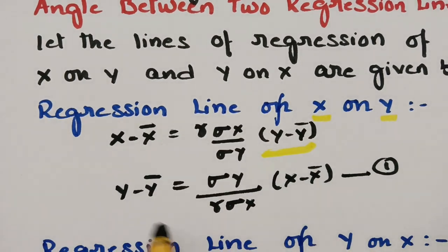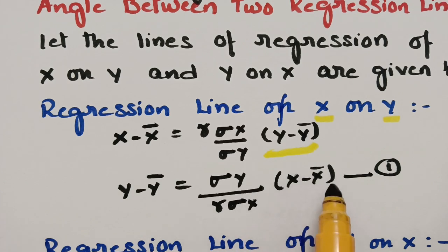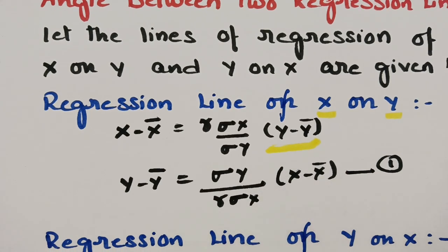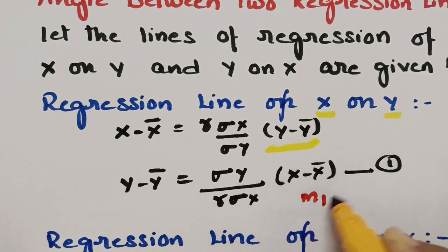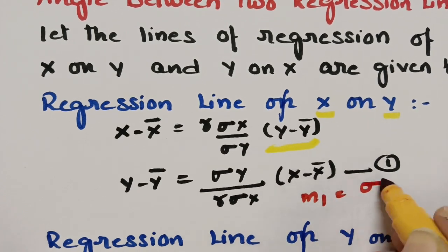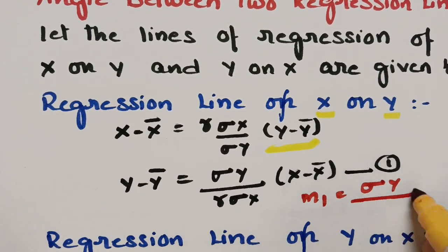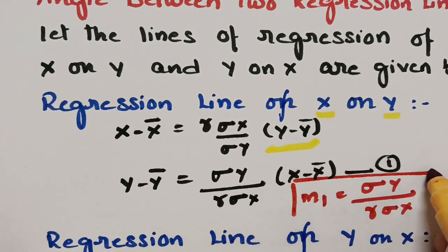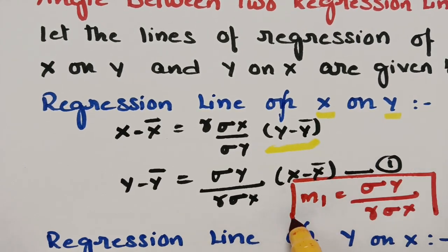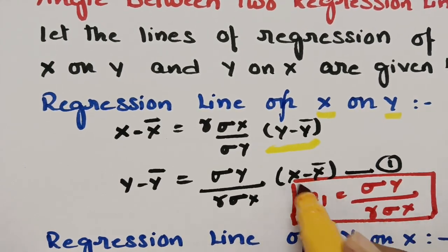This is of the form y minus y₁ = m(x minus x₁). We got the slope m₁ equal to sigma y divided by r times sigma x. This is the slope needed in order to calculate our angle.